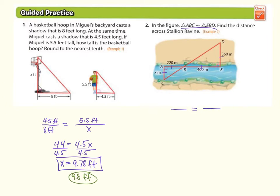So we need to determine that so we can set up our proportion. So 220 to 400 and X to 360. Let's cross multiply 220 times 360. That's going to be 79,200, and that equals 400X. Then the last step is just to divide by 400. 198 meters across the ravine.